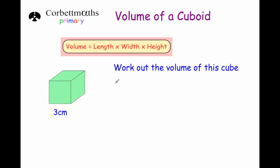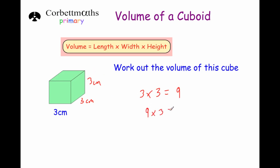Now let's look at a cube. With a cube, the length, width, and height are all the same measurement, and we use the same formula. We do 3 centimetres times 3 centimetres times 3 centimetres. Three times 3 is 9, and 9 times 3 is 27. So the volume of this cube is 27 centimetres cubed.